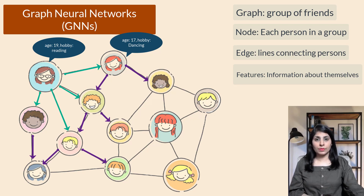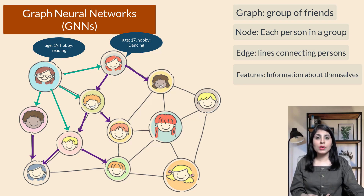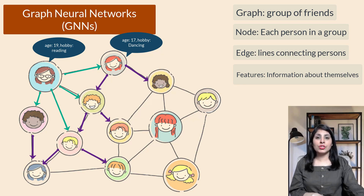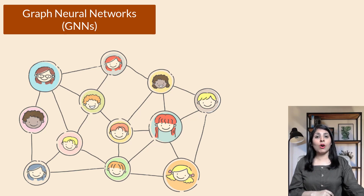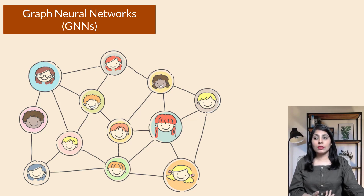The GNN continues this process for multiple layers, gathering more and more information from the group of friends. Finally, with all the collected information, the GNN can make predictions — for example, predicting a person's interests based on their friends' interests, or classifying people into different groups based on their characteristics.